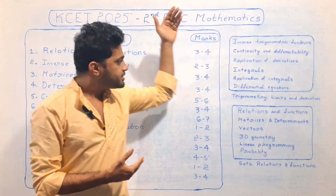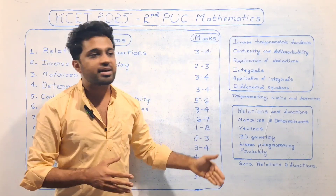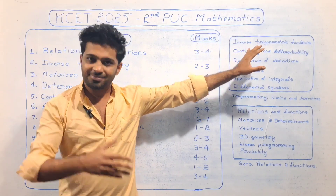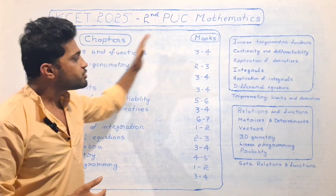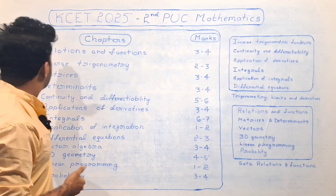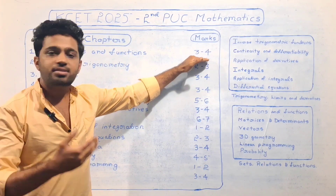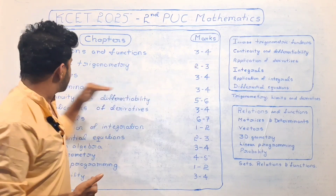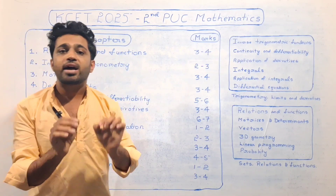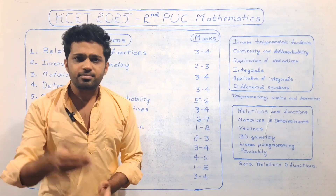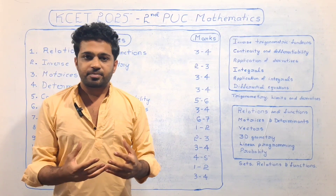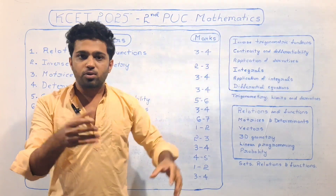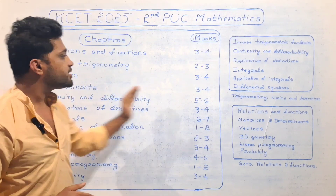If you look at chapter-wise weightage, you need to divide the chapters. Relations and Functions carries 3 to 4 marks. Inverse Trigonometry carries 2 to 3 marks. Matrices and Determinants carries 3 to 4 marks. These are related chapters, so if you focus chapter-wise, you need to practice both Matrices and Determinants together.